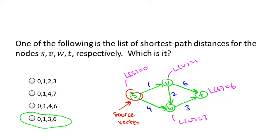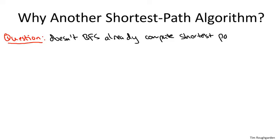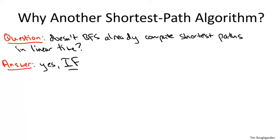Before I tell you how Dijkstra's algorithm works, I should justify the existence of this video. This is not the first time we've seen shortest paths — that was one of the applications of breadth-first search. But breadth-first search computes shortest paths only in the special case where every edge has length one. At the moment we're trying to solve a more general problem: shortest paths when edges can have arbitrary non-negative lengths. For example, in the graph from the previous quiz, if we ran breadth-first search from S, it would say the shortest path distance from S to T is two, because there's a two-hop path.